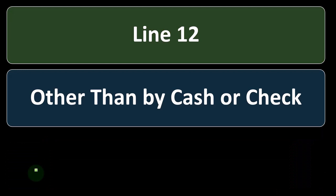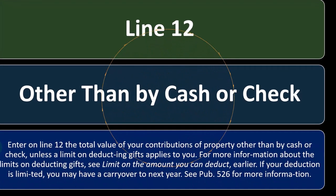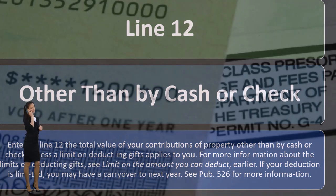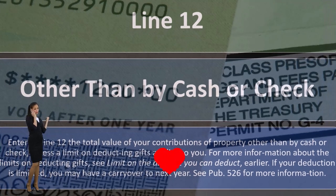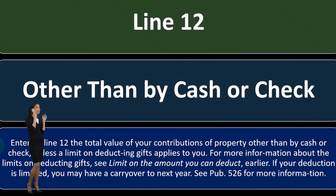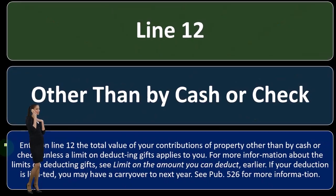Line 12 — other than by cash or check. Enter on Line 12 the total value of your contributions of property other than by cash or check, unless a limit on deducting gifts applies to you. For more information about the limits on deducting gifts, see the limit on the amount you can deduct section discussed earlier. If your deduction is limited, you may have to carry it to the next year.